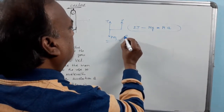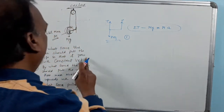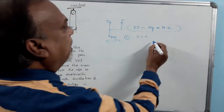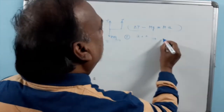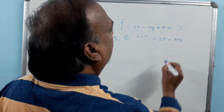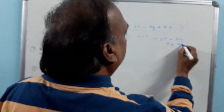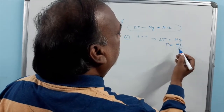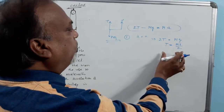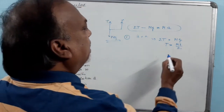In the first case, it is going with constant velocity, so A equals 0. That means 2T equals Mg, or T equals Mg divided by 2. So with this force, the man must pull the rope to lift himself with constant velocity.